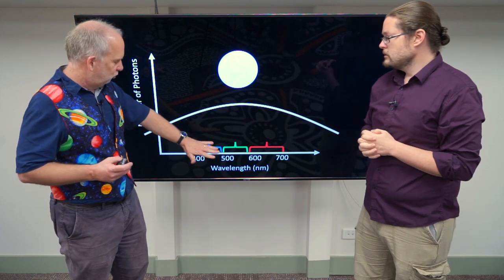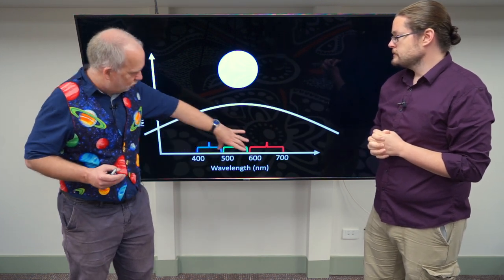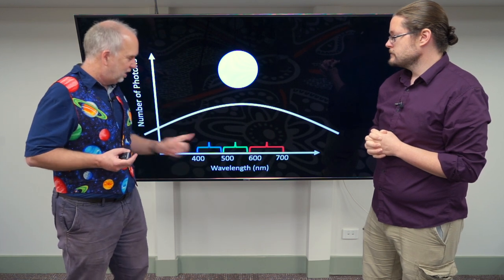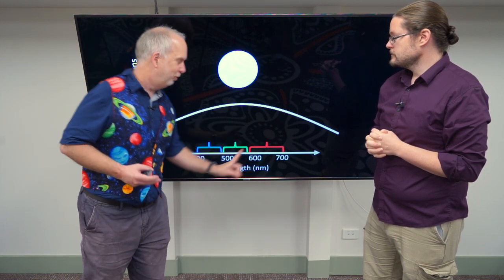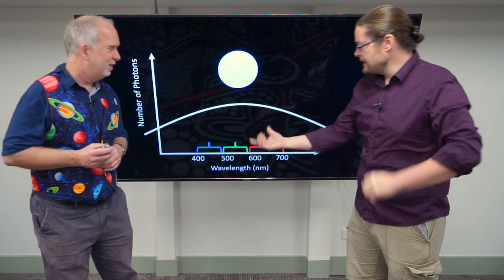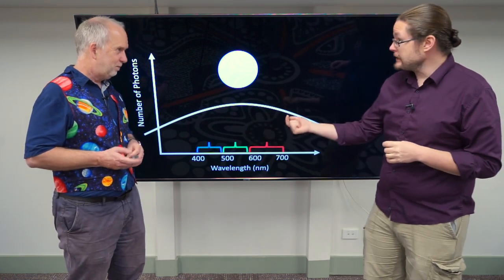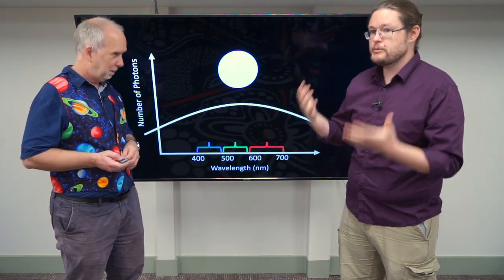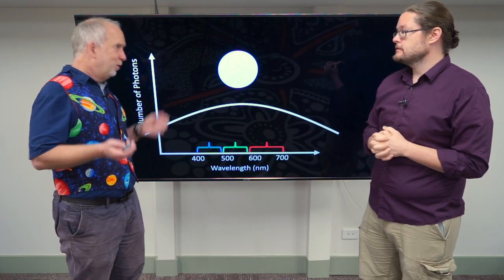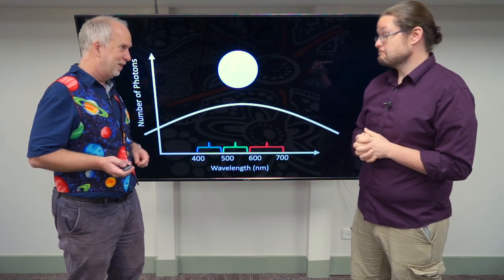So human eye just tells you some sort of average of what's in this region, that one and that one, and the relative amounts of those things. It doesn't tell you whether it's this sort of red or that sort of red or this sort of green or that sort of green. And it's that sort of detail that we actually really need to understand what objects in space are made up of. Which is why we use spectrometers and not just eyeballs when looking at things in space.